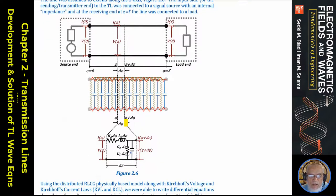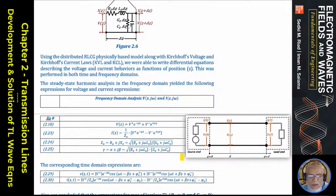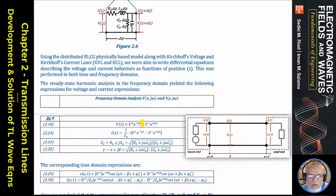We took an increment, looked closely at delta R, delta L, delta G, and delta C, and related the voltage and current at one end of the increment to the other end — arriving at a difference equation. Taking the limit as delta z goes to zero gave a differential equation. The solution was V(z) = V+ e^(-gamma*z) + V- e^(+gamma*z), where gamma equals the square root of (R + j-omega-L)(G + j-omega-C), and the current equation had a similar form with one over Z_naught and a minus sign.